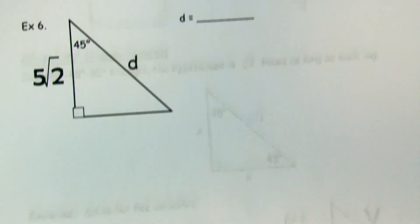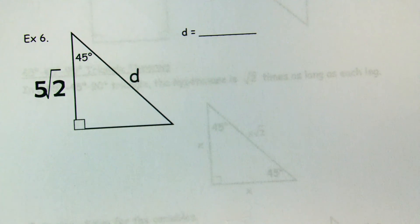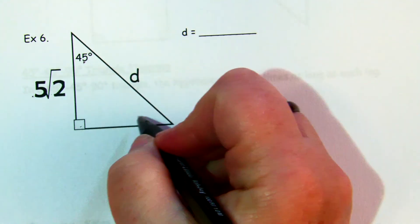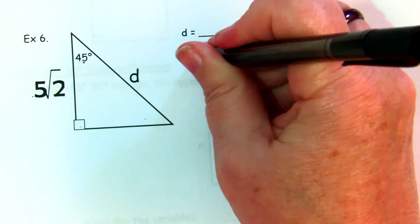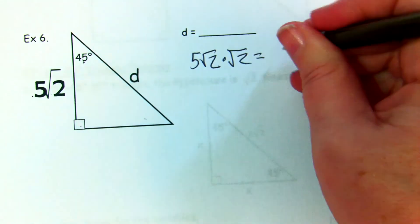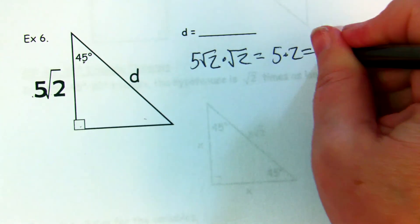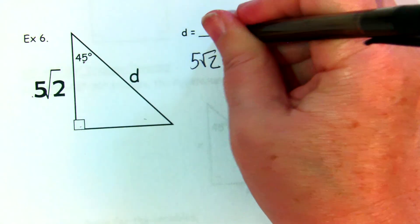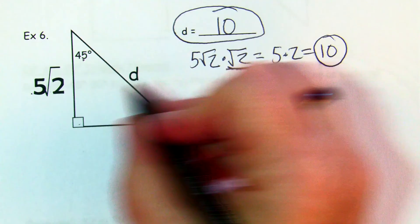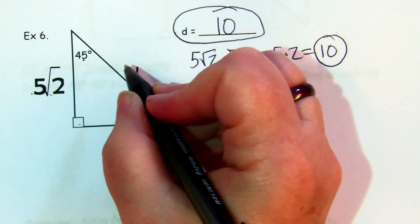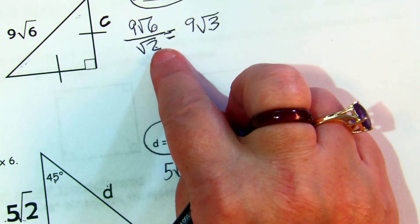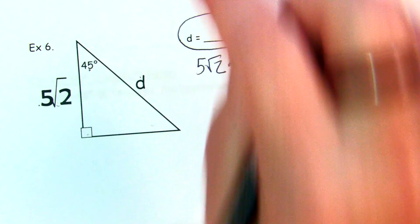The last example: one leg is 5√2, and it's a 45-45-90 triangle. You take 5√2 and multiply by √2 to get the hypotenuse. 5 × √2 × √2 = 5 × 2 = 10, so d = 10. To summarize: multiply by √2 when you have the leg and want the hypotenuse; divide by √2 when you have the hypotenuse and want the leg.